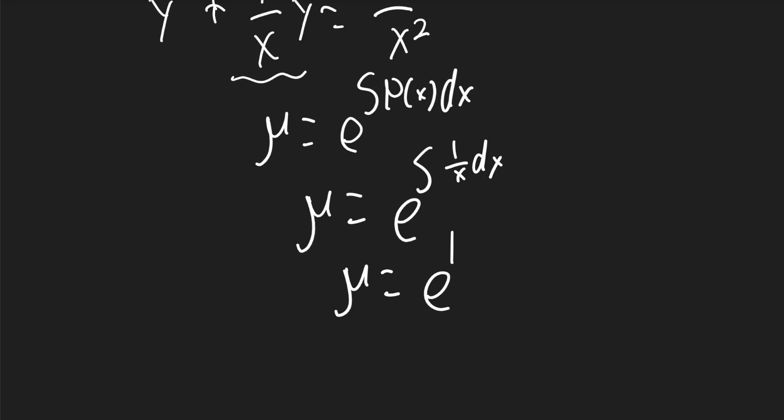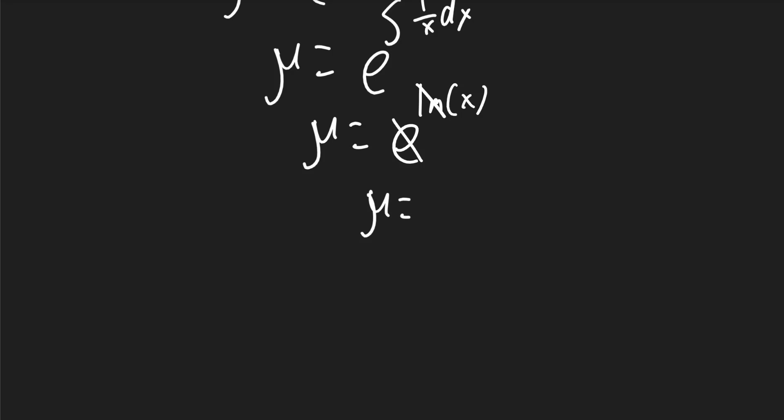So mu will be equal to e to the power of ln x. This e is going to cancel the ln, and mu is going to be equal to x.